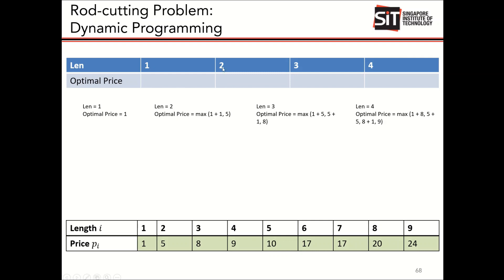Let's start with the base case. If my length equals one, there's no way to cut it, so the optimal price will be the value of one from the price table.